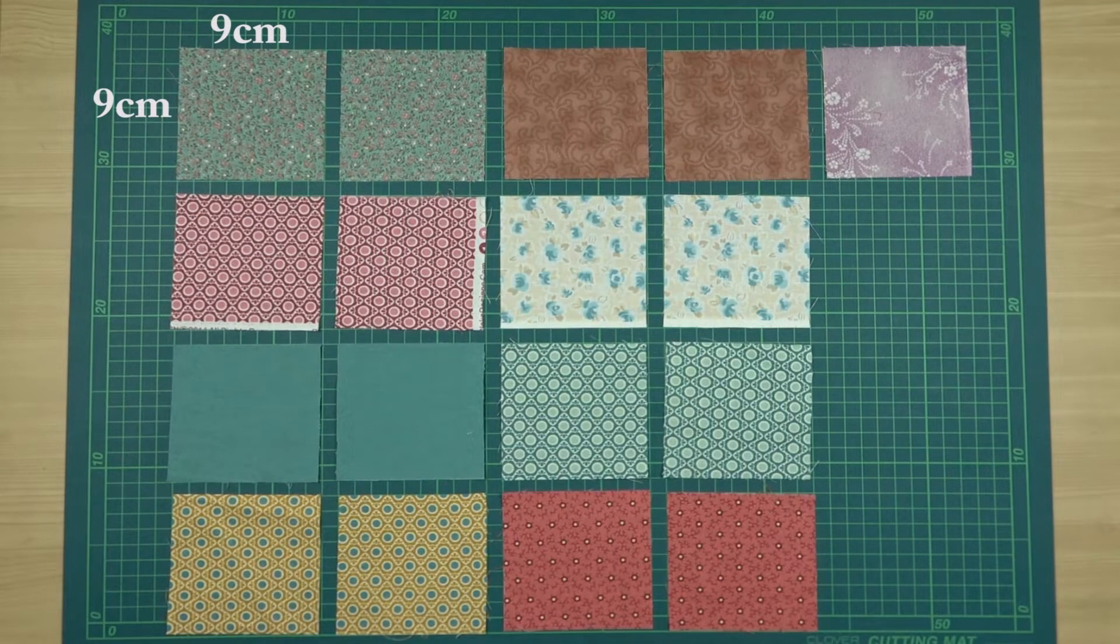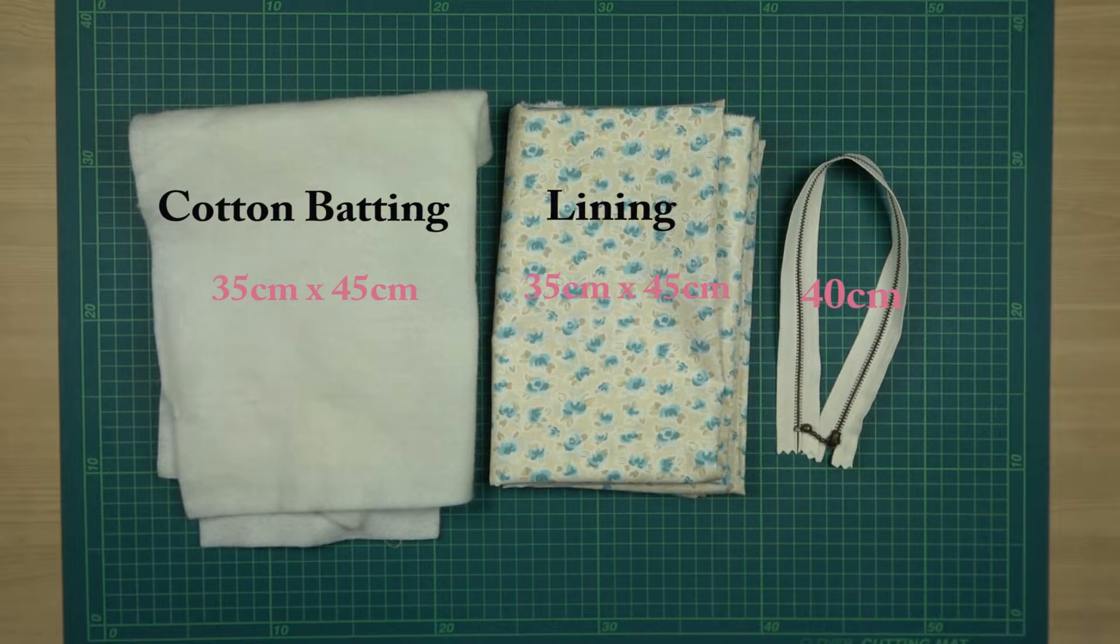Hey guys, if you want to make a pouch, you should prepare 17 pieces of squares. Another thing we need is a cotton bedding, the lining, and the zipper. So now we are going to get started with all the materials.